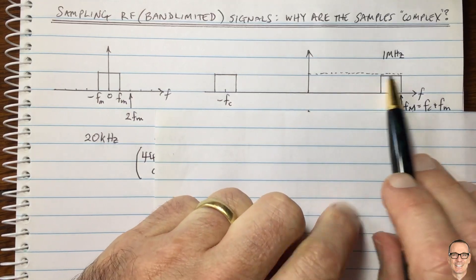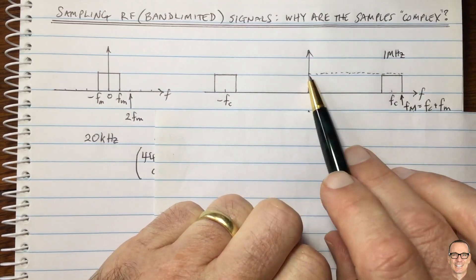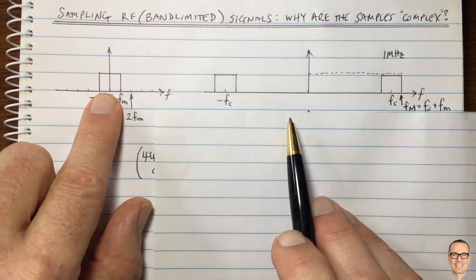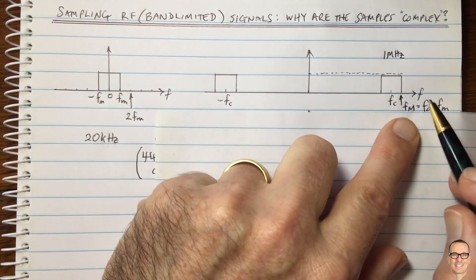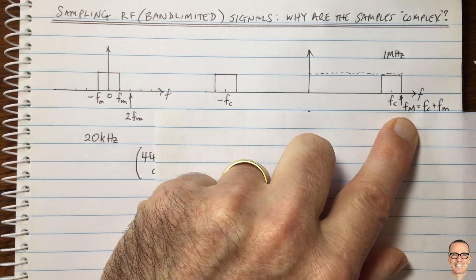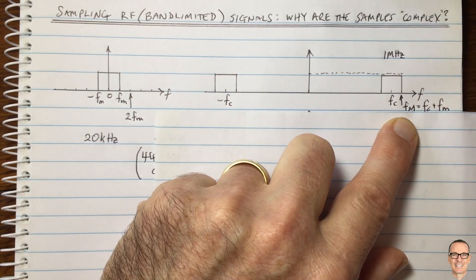Now, what we could do is if we wanted to digitize this, we could consider this in exactly the same way as the baseband example. And we could sample at 2 times FM. We could do that if we wanted to.